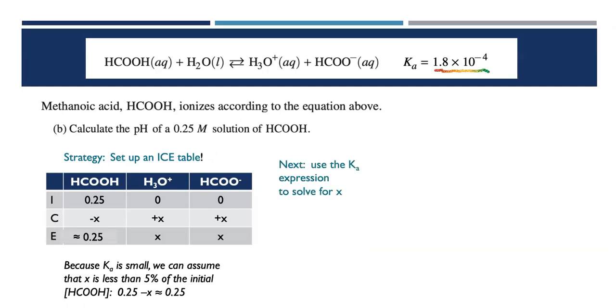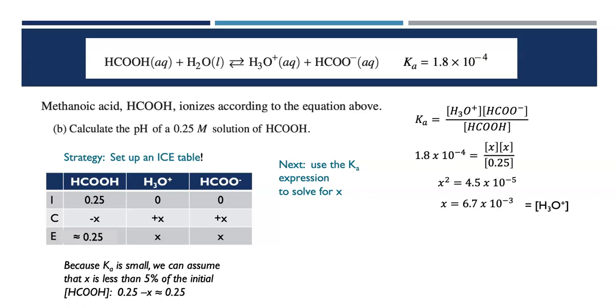Then we can assume that x is less than 5% of that initial methanoic acid concentration. In other words, I can say that 0.25 minus x is approximately 0.25. And I'm going to make that approximation because I don't want to do the quadratic equation. If you've got a quadratic equation solver in your graphing calculator, more power to you. Go for it. But it's not necessary on the AP exam. You can use this approximation if you're not told that x is greater than 5%. So our next step is to use the Ka expression that we wrote in part A and solve for x. So we've got our Ka expression. We have our equilibrium rows, and we're going to just put those values in. So x for H3O+, x for HCOO-, and 0.25 for the methanoic acid. I'm going to substitute those in. I'm going to rearrange. I'm going to solve for x. So x works out to be 6.7 times 10 to the minus 3rd molar. I didn't write the unit in, but it is a molarity. And that's equal to the hydronium ion concentration.